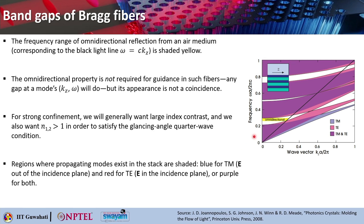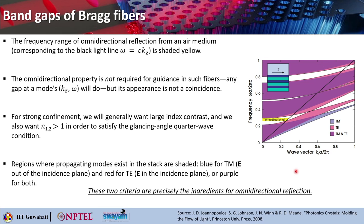We will also want both the refractive indices to be greater than 1 so that it satisfies the glancing angle quarter wave condition discussed before. The regions show where the propagating modes exist: the blue color shows where the TM modes exist — where the electric field is out of the incidence plane — the red ones are for TE where the electric field lies along the incidence plane, and the purple color is for both TM and TE. These two criteria are precisely the ingredients for the omnidirectional reflection.